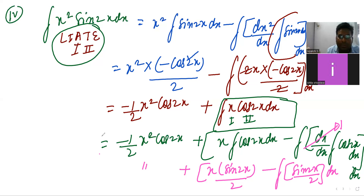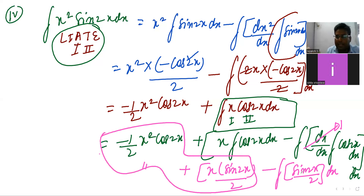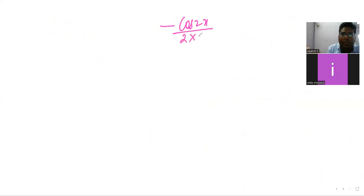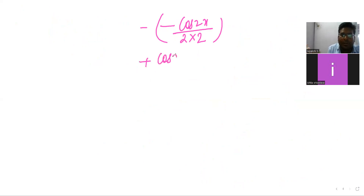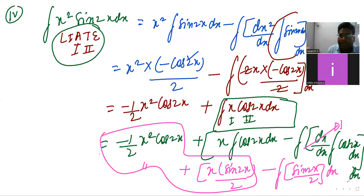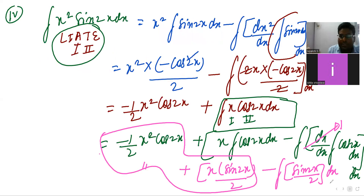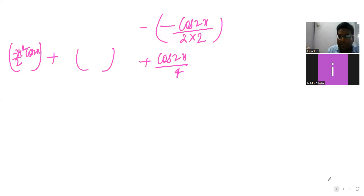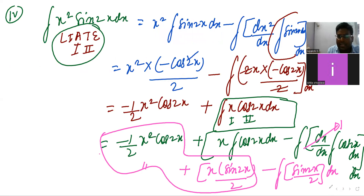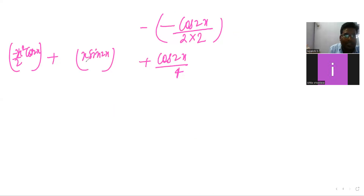Carry forward this part. Integration of sin(2x)/2 is minus cos(2x)/2, and there is already a 2 in the denominator, so this becomes cos(2x)/4. The full answer is minus (1/2)·x²·cos(2x) plus x·sin(2x)/2 plus cos(2x)/4. I'll understood now — this is the whole integration.